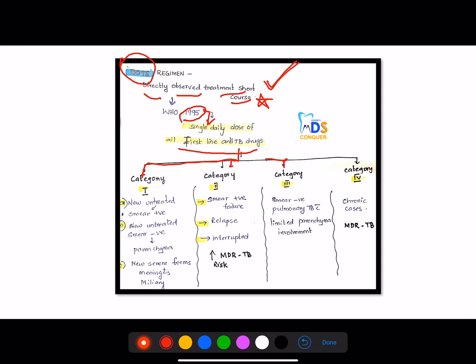That is category 1, 2, 3, and 4. This category 1 patients include new untreated cases which are smear positive for tuberculosis, and new untreated smear negative with tuberculosis, and also the involvement of parenchyma, and new severe forms like meningitis and miliary tuberculosis.